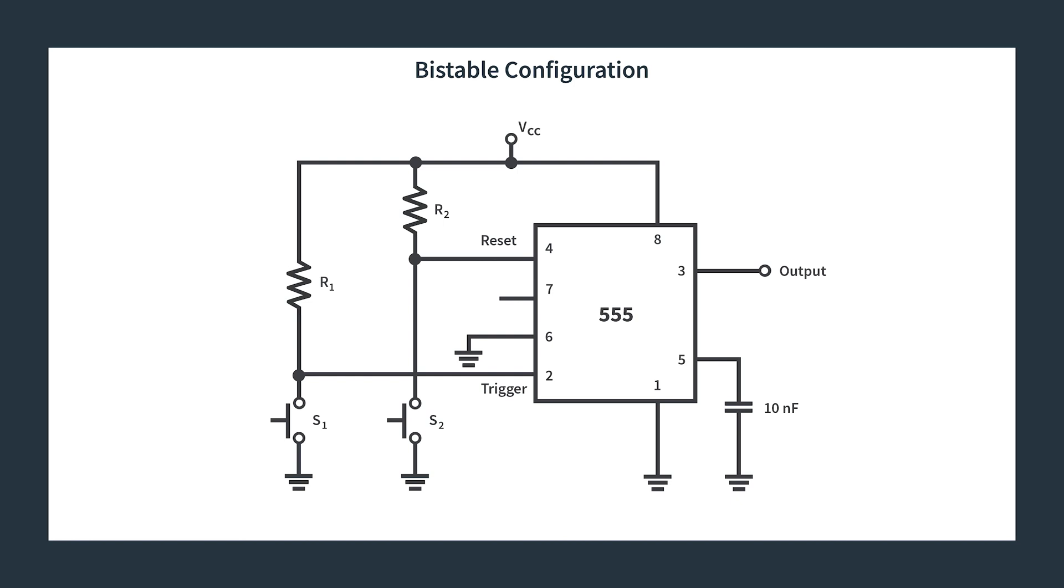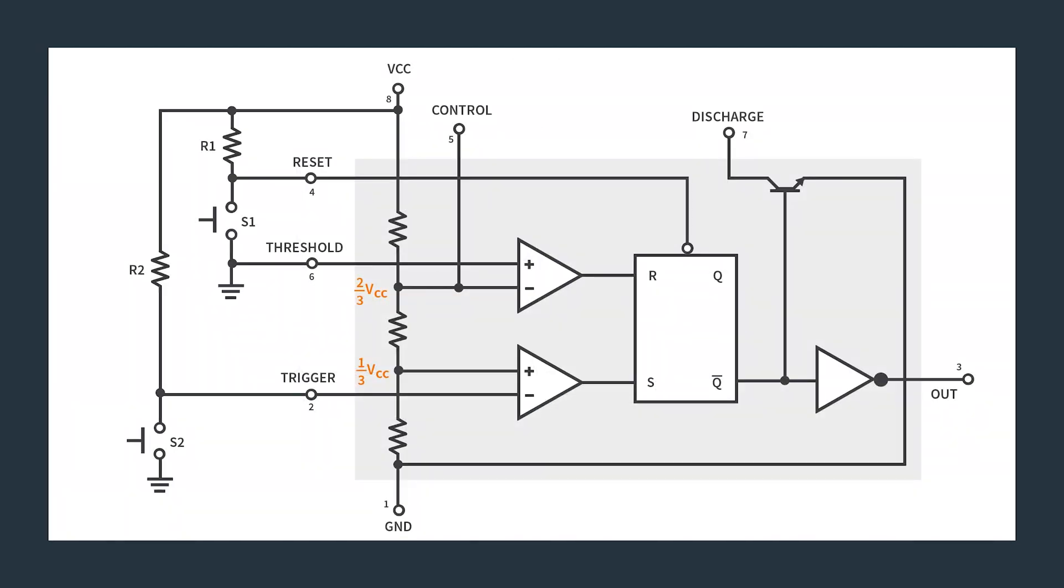That is all we have for the configuration of the 555 timer: two resistors, two switches, a capacitor that is not truly necessary for it to actually run, but it's nice just to make sure you don't have any issues. So where it gets a little bit more interesting is internally. Let's look at the inside.